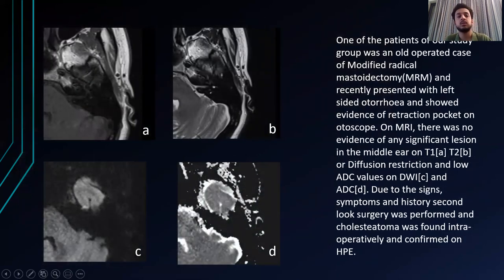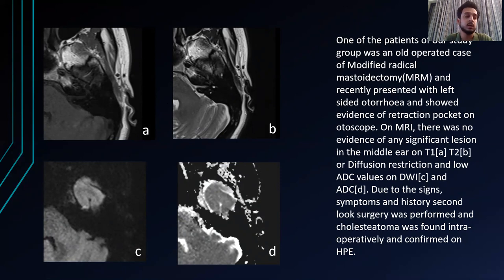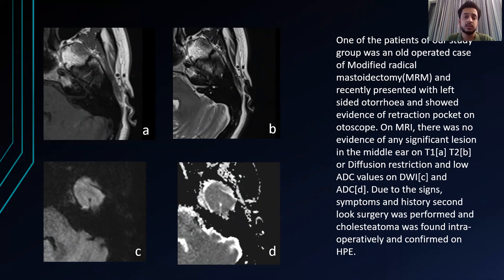Another case had clinical findings of CSOM; however, on MRI there was no soft tissue lesion in the middle ear and there was no diffusion restriction or low ADC values. However, as this was a case of modified radical mastoidectomy on the left middle ear with recurrent symptoms of CSOM, a second-look surgery was performed and a cholesteatoma was found in the left middle ear. So this was a false negative.